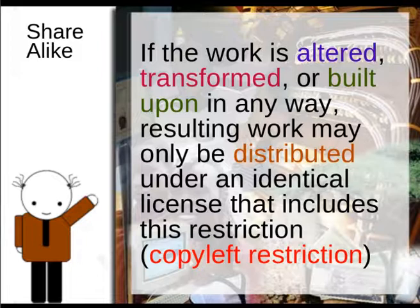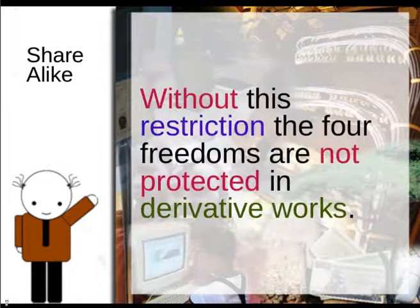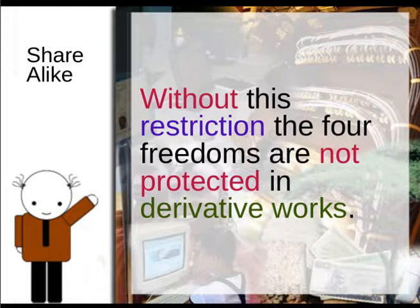This is the share-alike clause. If the work is altered, transformed or built upon in any way, the resulting work may only be distributed under an identical license that includes this restriction. This is the copyleft restriction. So if I make my work available under an attribution share-alike license, the share-alike clause ensures that anybody — a commercial company or anyone else — who takes and builds upon it must make what they build available also under a copyleft license. You don't need a non-commercial restriction to prevent people from stealing your work and selling it. It's just utterly and totally unnecessary. Without this share-alike restriction, the four freedoms are not protected in derivative works.